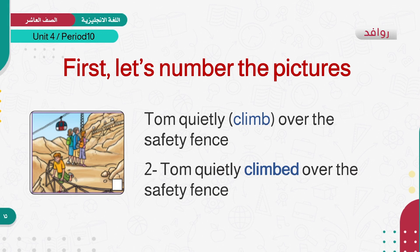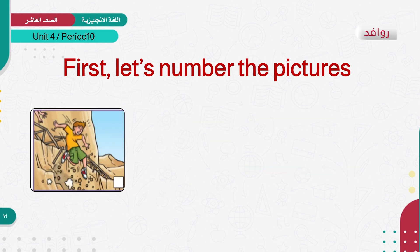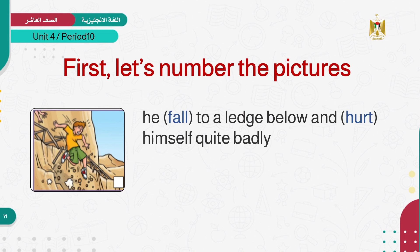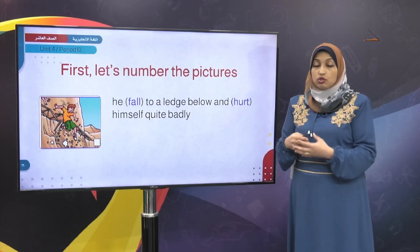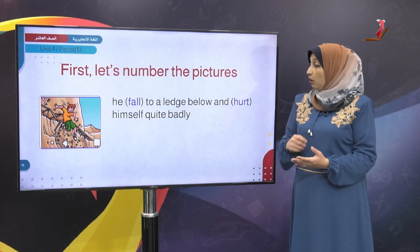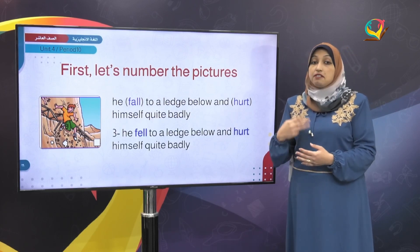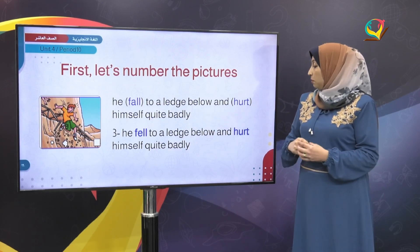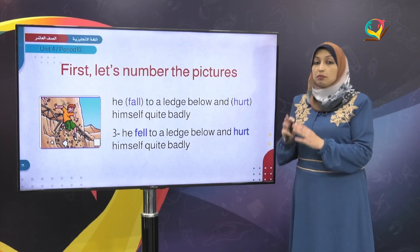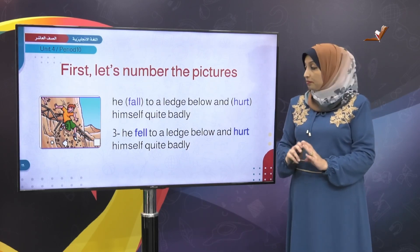What happened after that? This is number three. He fall to a ledge below and hurt himself quite badly. Of course he hurt and injured himself. 'Fall' changes in English to 'fell' in the past. He fell to a ledge below and hurt — 'hurt' stays the same conjugation.